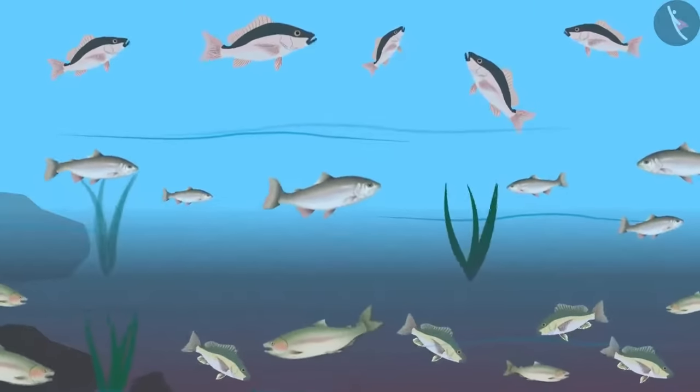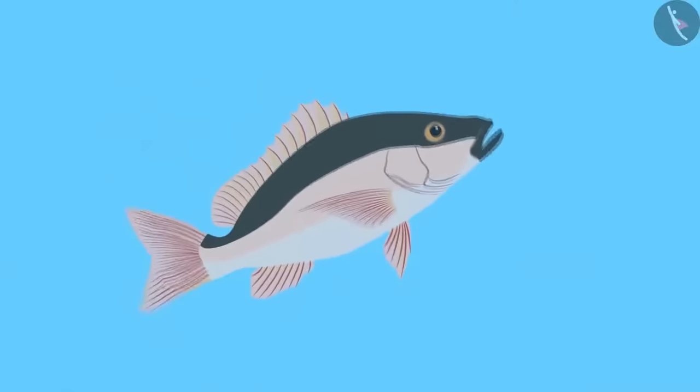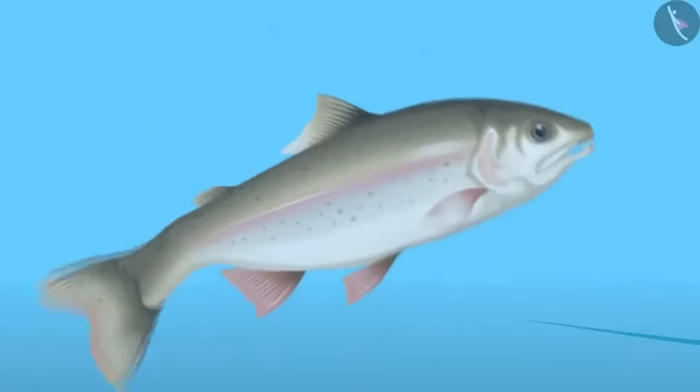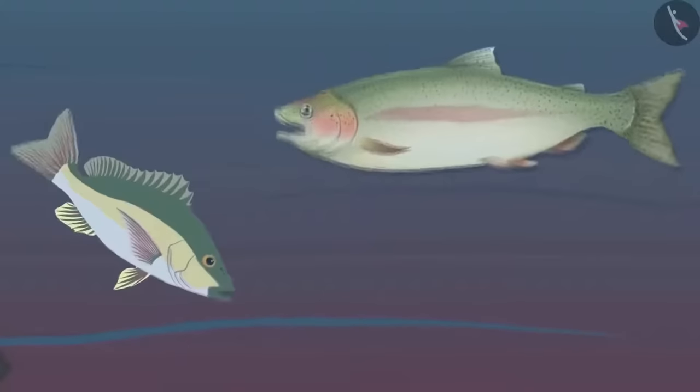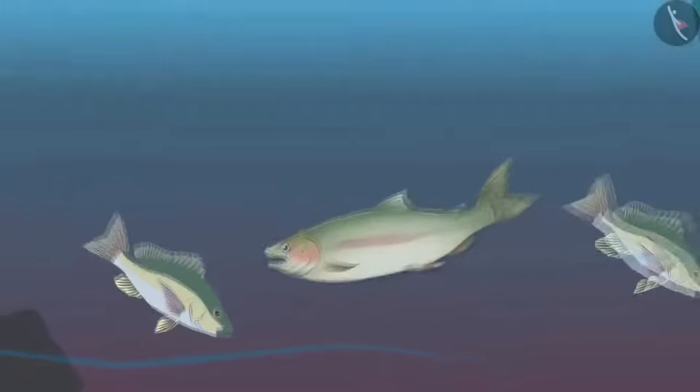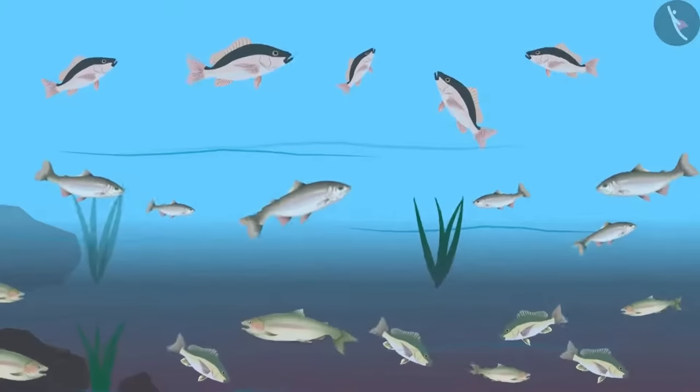As Catla takes its food from the surface of the pond, Rohu from the central region of the pond, Mrigals and Common Carp take their food from the bottom. These species can simultaneously use all the food in the pond without competition.